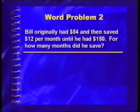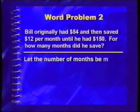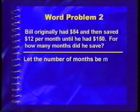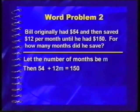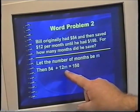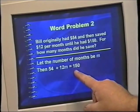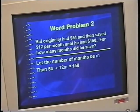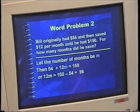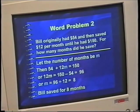The next problem: Bill originally had $54 and saved $12 per month until he had $150. For how many months did he save? We let the number of months be M. Then 54 plus 12M equals 150. Transposing first: 12M equals 150 minus 54, which is 96. Divide 96 by 12 to get 8. Bill saved for 8 months.